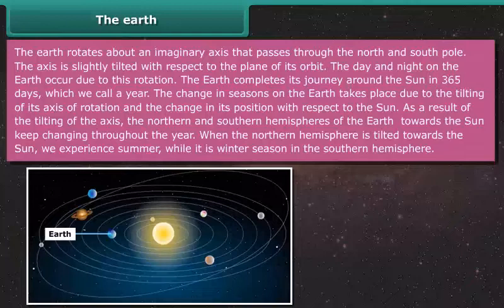The day and night on the earth occur due to this rotation. The earth completes its journey around the sun in 365 days which we call a year.